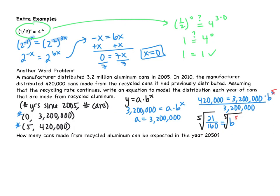So then we get our b to be about 0.67. So our equation is y = 3.2 million times (0.67)^x. Now, does that make sense? 0.67 is a value of b is indicative of exponential decay. Is this decaying? Well, yes. We start out with 3.2 million cans, then 420,000 cans from the recycled cans. So yes, this is going down.